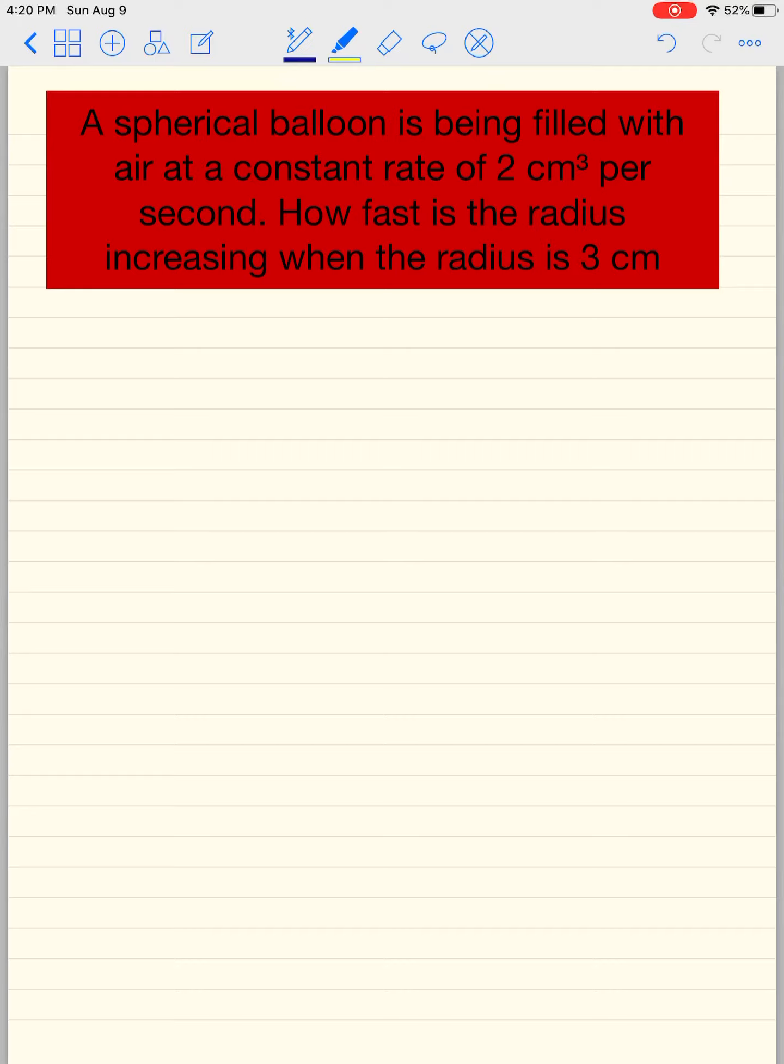So let's take this and let's work with it. Step 1 is to come up with a formula for your problem. Since this says spherical balloon, V = 4/3 πr³. This is great because it only has one variable on the right side, which is the radius. On the left side, we have one variable, which is the volume.